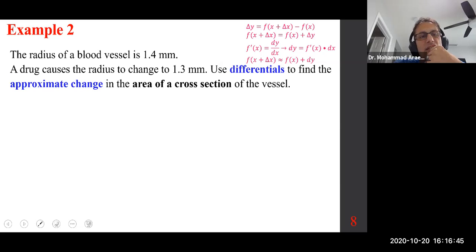The radius of a blood vessel is 1.4 millimeters. The drug causes the radius to change to 1.3 millimeters, so it's changing, reducing, decreasing. We want to use differentials to find the approximate change in the area of a cross-section. So first thing first, we need to know the area of a cross-section. Is this circular shape? Then we want to relate the area to the radius.